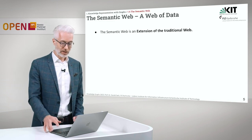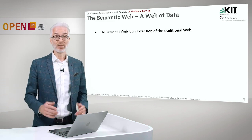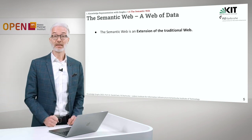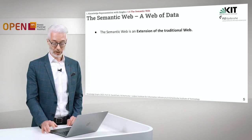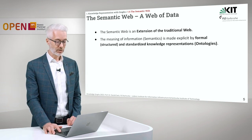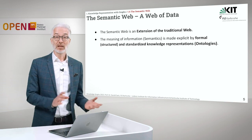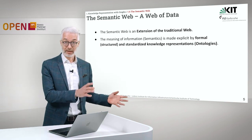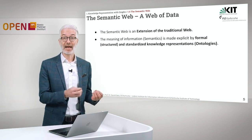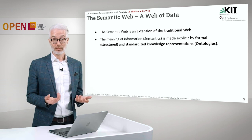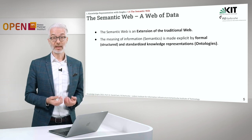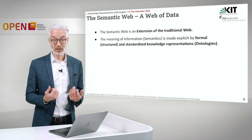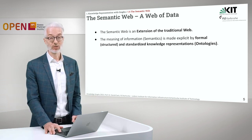Let's start again with the definition. The semantic web is an extension of the traditional web. The meaning of the information — which means the semantics — is made explicit by formal, structured and standardized knowledge representations, so that will be ontologies.